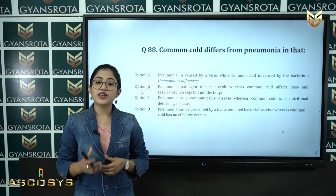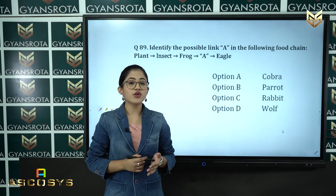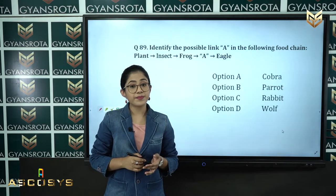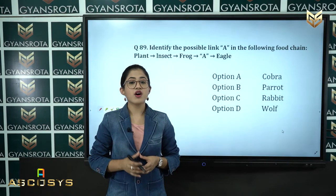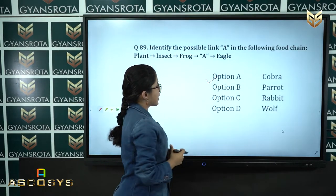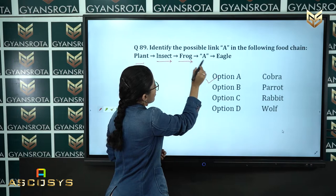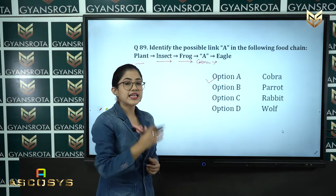Question number 89: Identify the possible link A in the following food chain — plant → insect → frog → [link A] → eagle. Options: A cobra, B parrot, C rabbit, D wolf. The correct answer is option A, cobra. The plant is eaten by the insect, the insect is eaten by the frog, the frog is eaten by the cobra, and the cobra is eaten by the eagle. This is the correct sequence of the food chain.